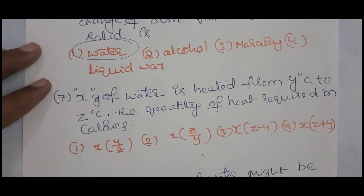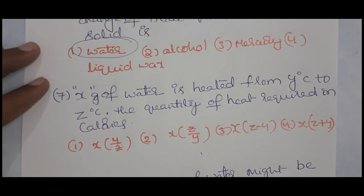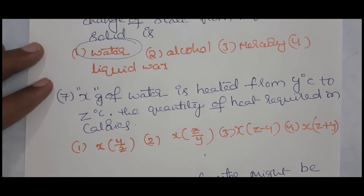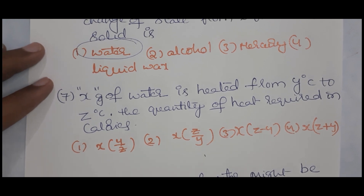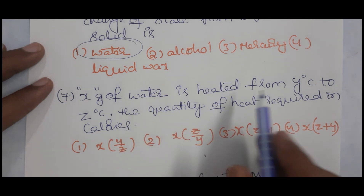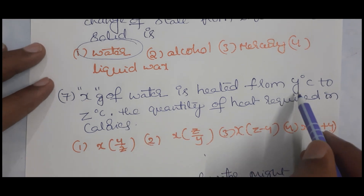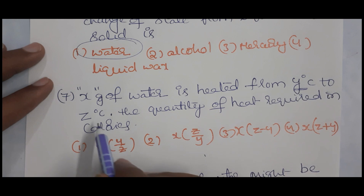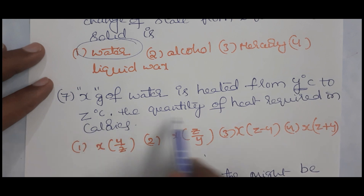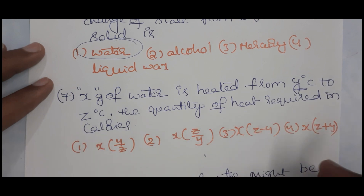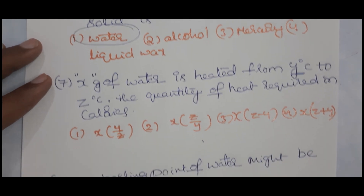This model is the most important. You can expect one question from this model in APRJC 2022. X grams of water is heated from Y degrees Celsius to Z degrees Celsius — find the quantity of heat required in calories.